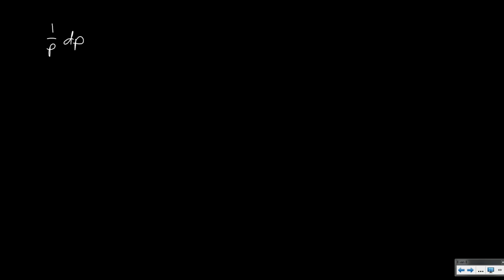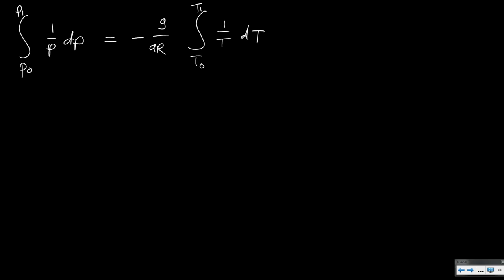We integrate from altitude 0, where we have pressure p0, to altitude 1, where we have pressure p1. The constants G, R, and A can be placed in front of the integral, and we integrate 1 divided by T with respect to T from T0 to T1. This now becomes high school mathematics, as both sides contain the same type of integral.